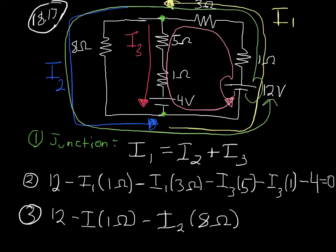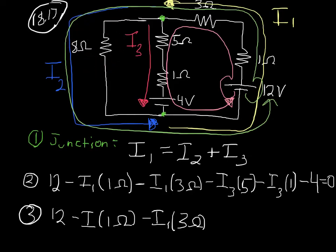Going through the 1-ohm resistor, then continuing through the 3-ohm resistor — I can't forget that 3-ohm resistor. My loop is going to the left, and my current is going to the left — same direction — so I subtract I1 times 3 ohms. Then coming down through the 8-ohm resistor, same direction as current, so I subtract I2 times 8 ohms. Following the loop all the way around and ending right back where I started — that's a complete loop equal to zero. So now I have three equations and three unknowns.